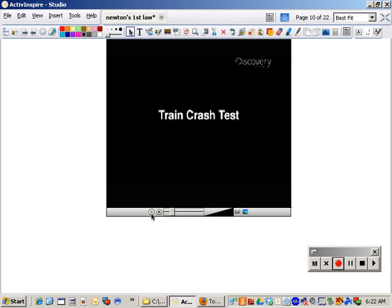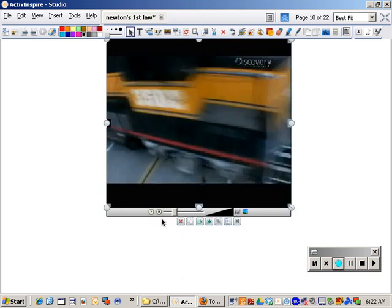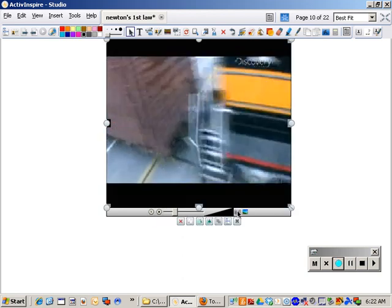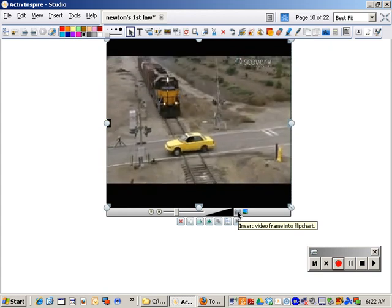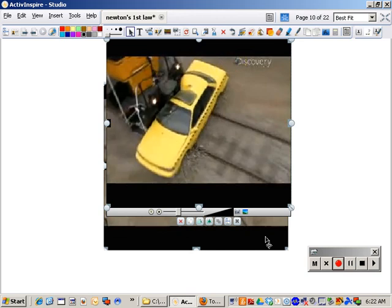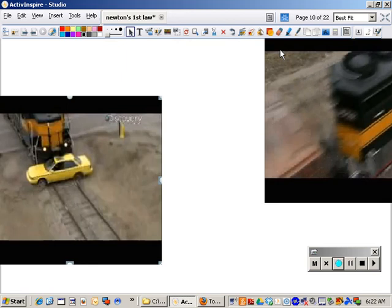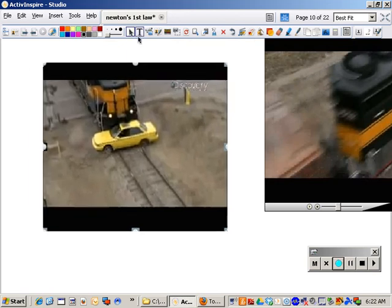So this is a train crash. Object at rest. Forces are completely balanced. Nothing's acting on it, it's just sitting there until... oops. Until now it feels an unbalanced force by the train, and now it can take off.